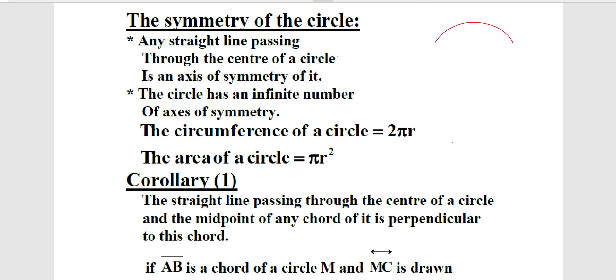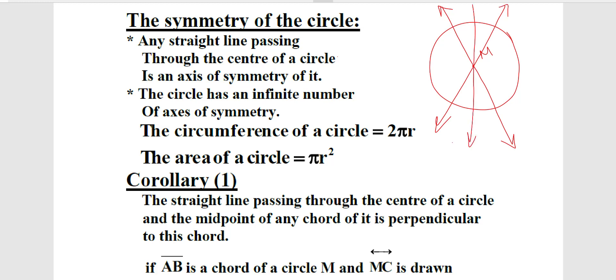For example, we have here a circle named circle M. When we draw a straight line passing through the center of this circle, it is called the axis of symmetry of this circle. How many axes of symmetry does a circle have? We can draw an infinite number of straight lines, all of them passing through the center point. All of them are called axes of symmetry. The number of axes of symmetry for any circle is infinite.